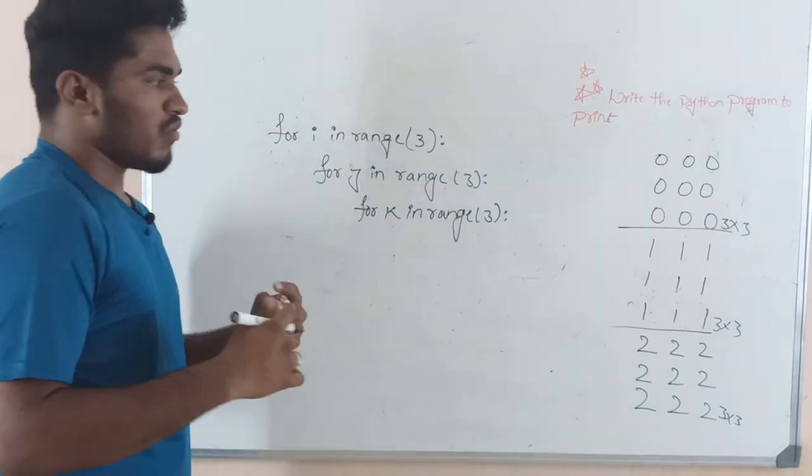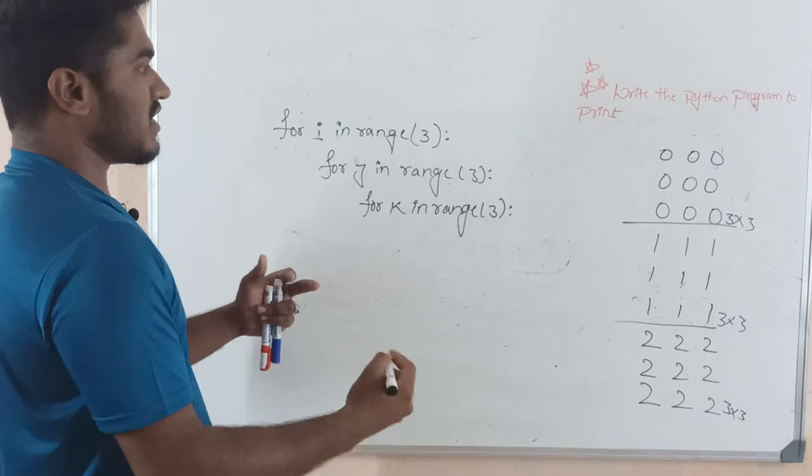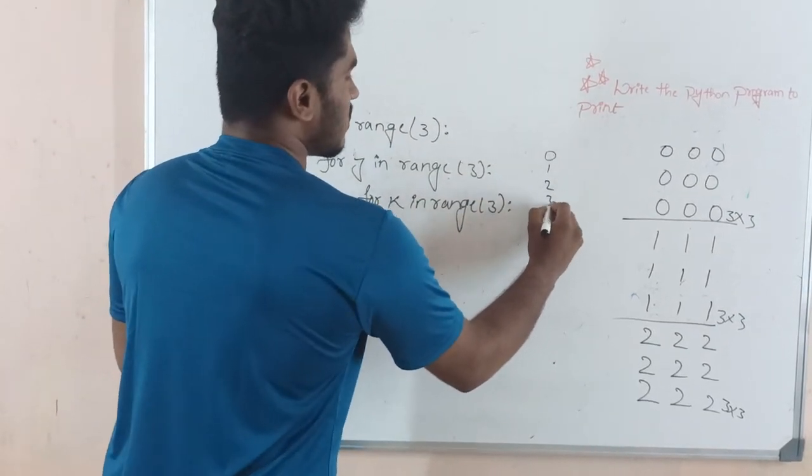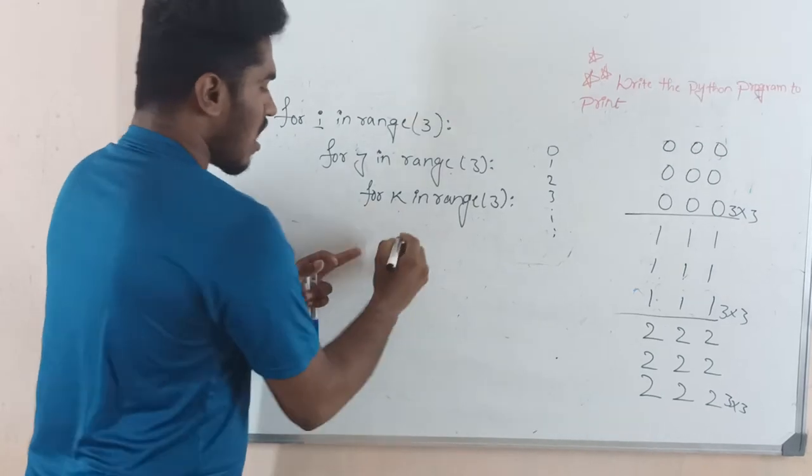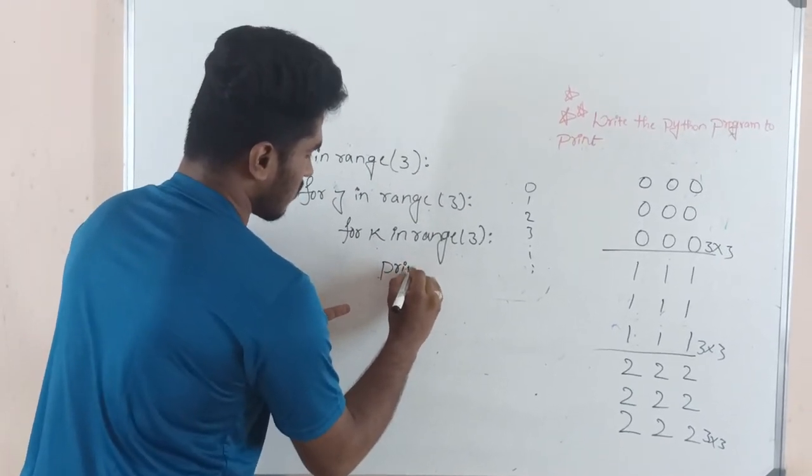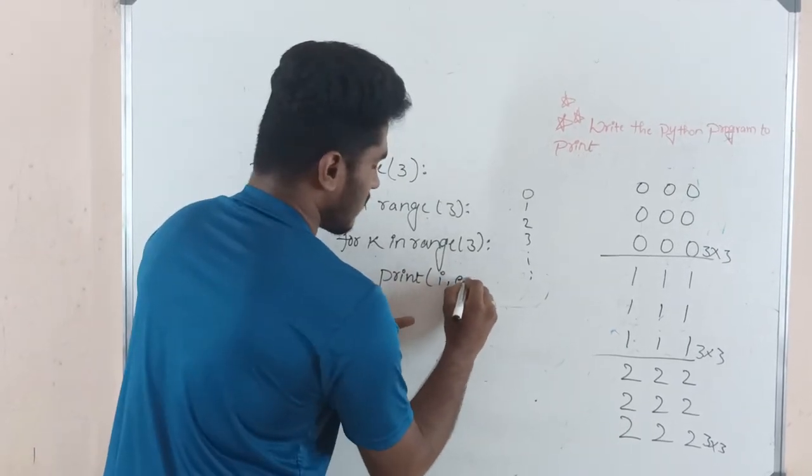So here I am going to print that particular i value. Print i, comma, end. In the last video I told that the print statement by default escapes to a new line, so to avoid that we are using this end function.